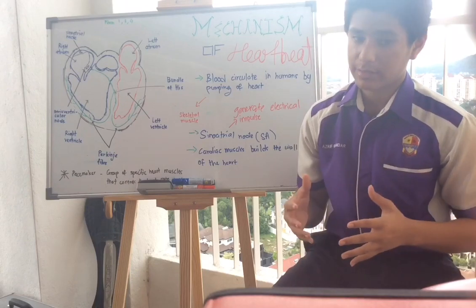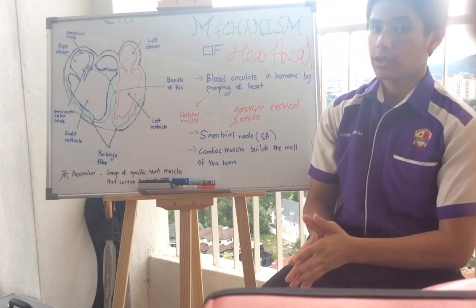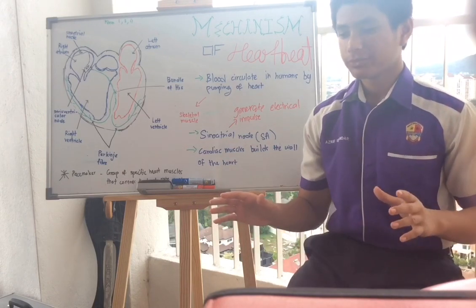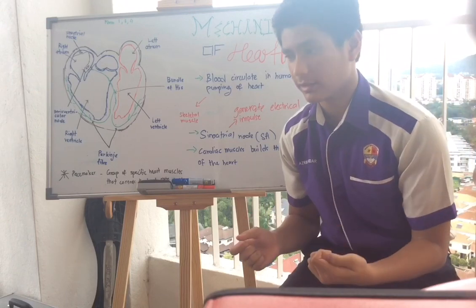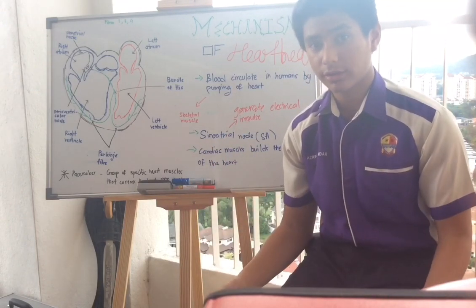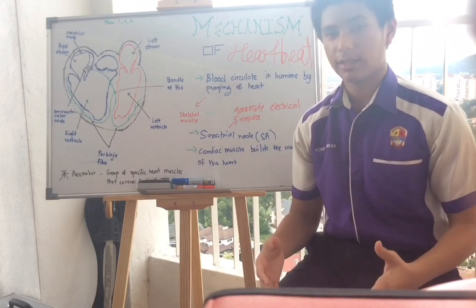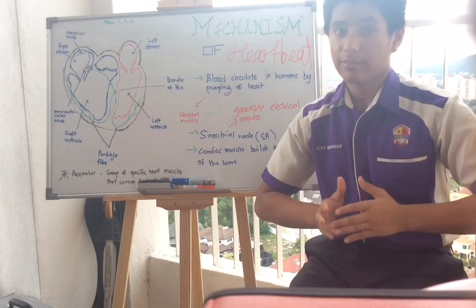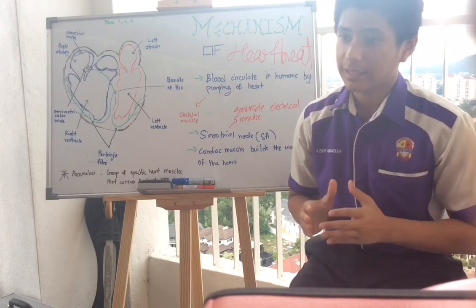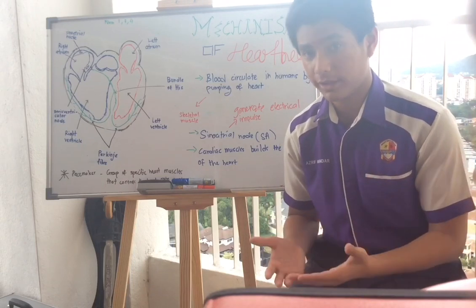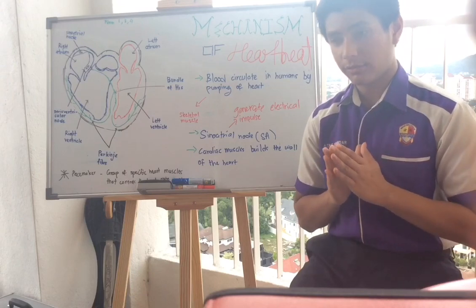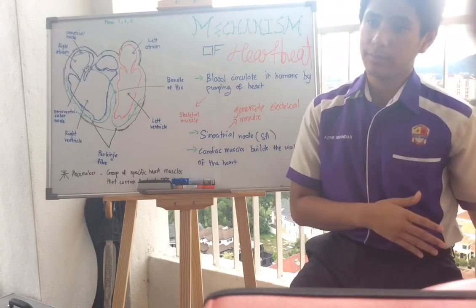The valves in the veins function to help blood flow in one direction — toward the heart. Gravity pulls everything downward, including blood inside our body. So when blood flows down, it must return back up to the heart. The valves close so that blood cannot flow backward past the point it has already passed.